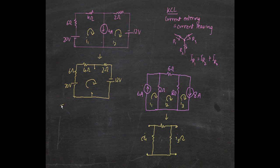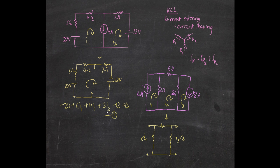So what we would get is: minus 20 plus six — we also write the currents in each loop, so we use those currents as well. So: six I₁ plus four I₁ plus two I₂ minus 12 volts equals zero. This is the first equation. We have two variables, I₁ and I₂ — two unknown variables. One equation is not enough for two unknowns; we need two equations. For three unknowns we need three equations, and so on.